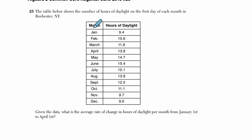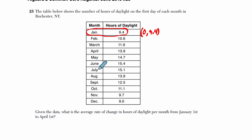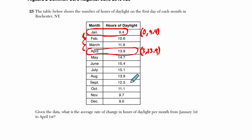We've got January 1st here, and it has 9.4 hours of daylight. Since our starting point — that's our input of zero, no time has passed — on January 1st, that's where we are, there is an output of 9.4 hours of daylight. Then we go up to April, so what is that? That's three months later — February 1st, March 1st, April 1st — and at that point the average amount of daylight is 13.9 hours.